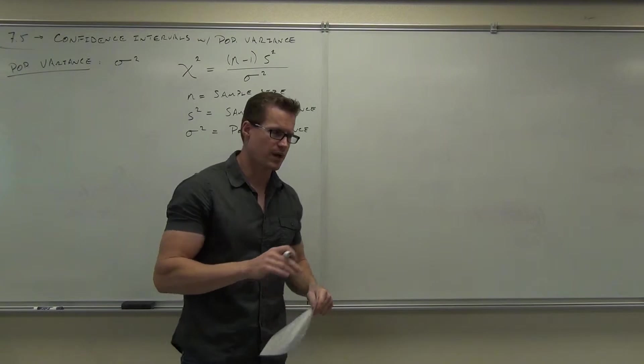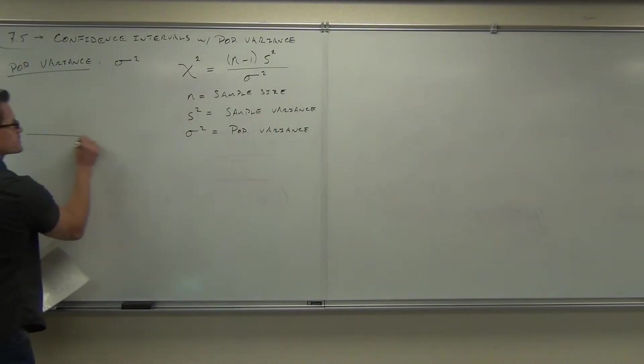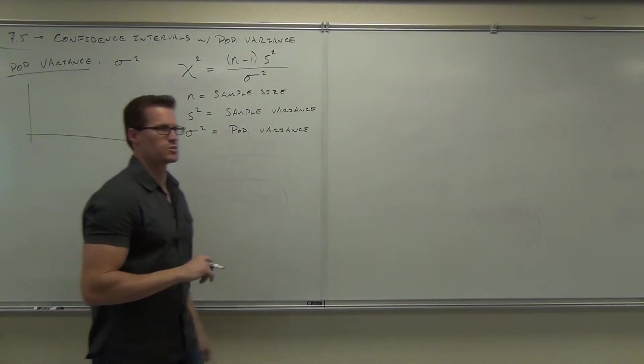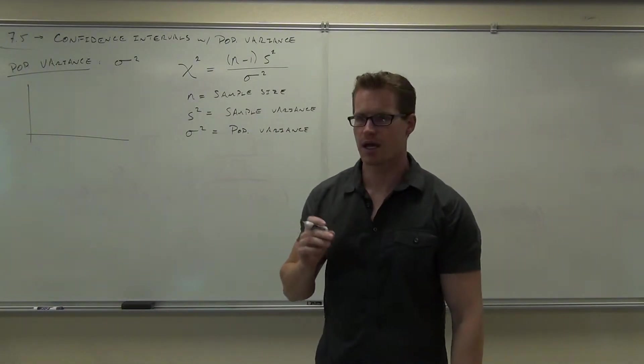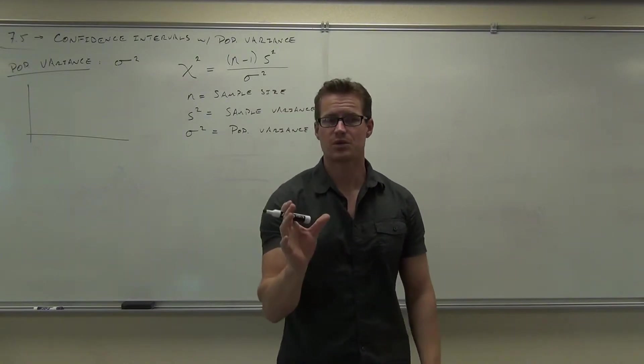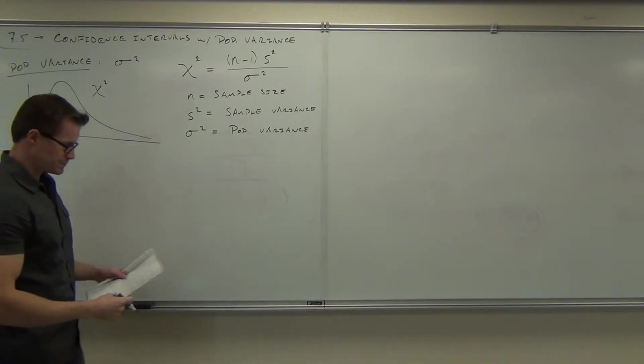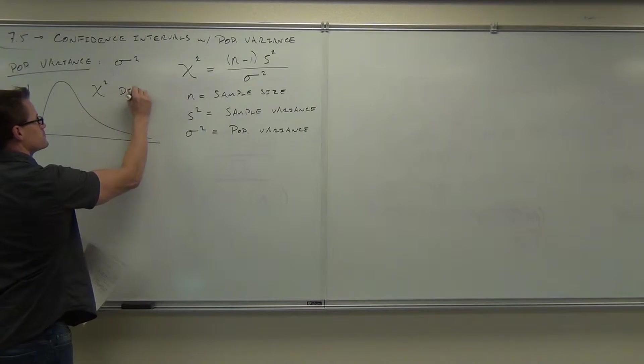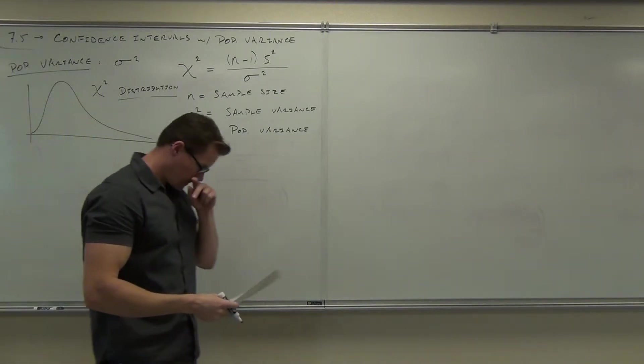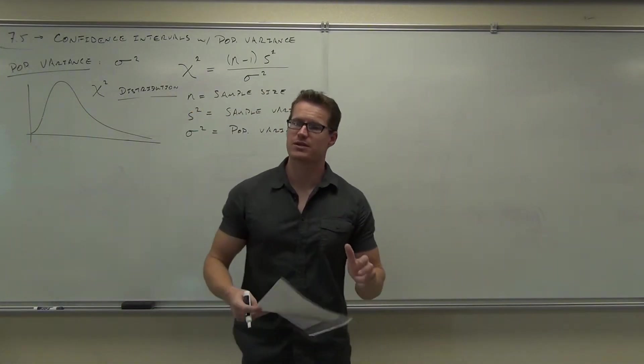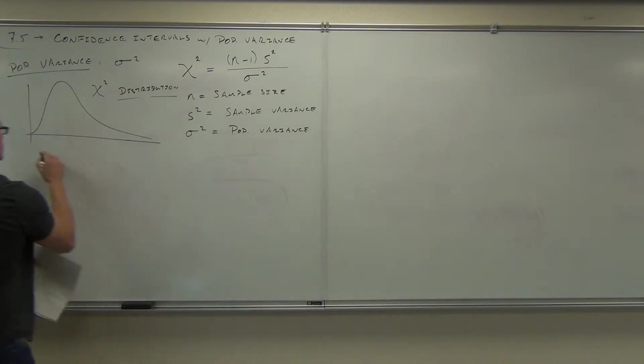A couple things about this. The distribution I'm about to show you, the chi-square distribution, it looks similar to a normal distribution. But I've got to warn you, this thing is not a normal distribution. It is kind of a bell-shaped curve, but it's not symmetrical. This thing starts at 0, 0, shoots up, and has a tail to the right. This is a chi-square distribution. A couple things about it we notice right off the bat. It is not symmetrical. It's not like a normal distribution. So definitely is not symmetrical.